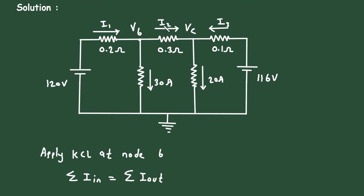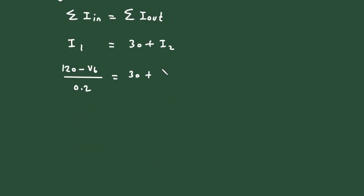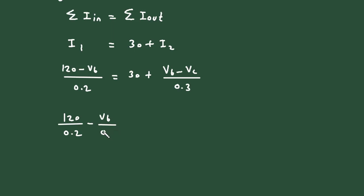Now I2 is (VB minus VC) divided by 0.3. Simplifying: 120 divided by 0.2 minus VB divided by 0.2, then keeping 30 on the right side and taking VB/0.3 to the left side, so it becomes minus VB/0.3, plus VC/0.3, equals 30.